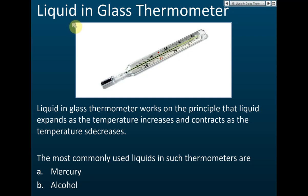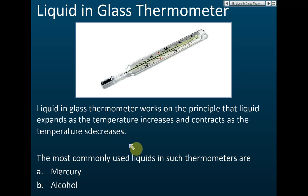In our syllabus there are a lot of thermometers — infrared thermometers, thermocouples, resistance thermometers — but you just need to know the liquid-in-glass thermometer. It works on the principle that liquids expand as temperature increases and contract as temperature decreases. The most commonly used liquids are mercury or alcohol.